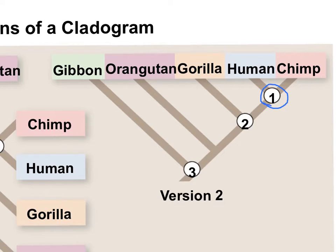This node — number one — is the common ancestor of humans and chimps. People tend to say: if humans evolved from chimps, how come chimps are still around? The truth is we did not evolve from chimps; we share a recent common ancestor with them. It's the same as asking: if you and your cousins share the same ancestors, how come you still have cousins? You do not evolve from your cousins — you share the same ancestor, which is your grandparents.